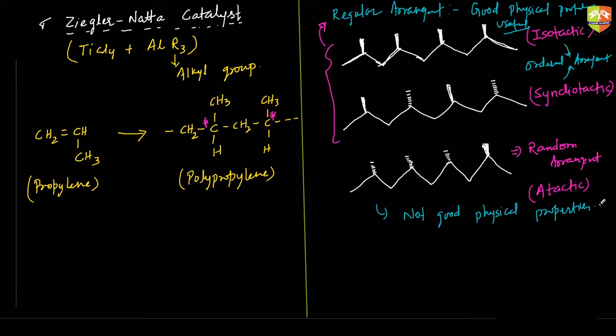To avoid the atactic arrangement, we use a catalyst, and that catalyst we call it as Ziegler-Natta catalyst. The structure of the polymer depends upon the type of mechanism. In free radical mechanism, there is no control over the reaction, and the possibility to get random arrangement of molecules is high. This structure is known as atactic structure, and their physical property is not good, hence they are not useful.